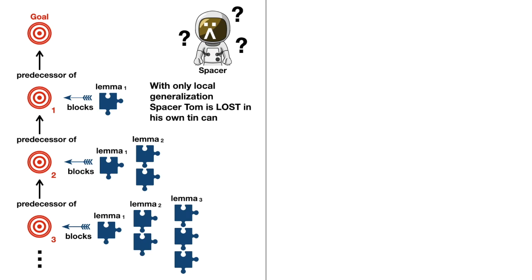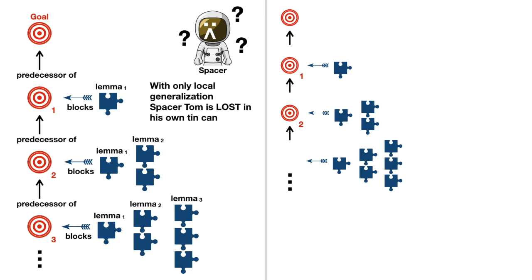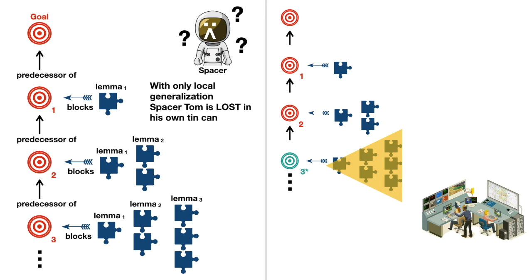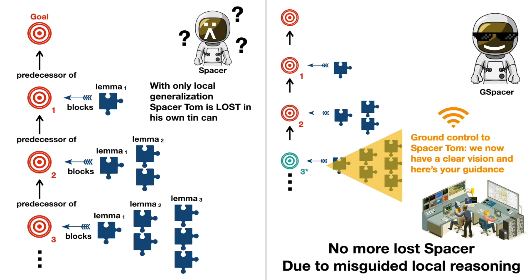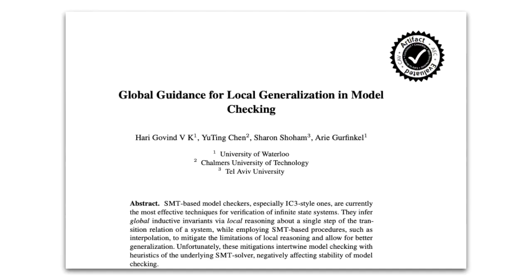In this paper, we introduce a framework for global generalization in Spacer, defined by three global generalization rules. We instantiate the rules for the theory of linear integer arithmetic. The three global generalizations, targeting both lemma and proof-obligation spaces, significantly improve the robustness and scalability of Spacer and outperform existing data-driven approaches. We look forward to seeing you virtually during our CAV talk and discussing our paper.